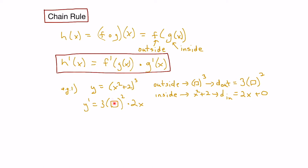Our box represents x squared plus 2, so we'll substitute that back in. Our derivative becomes y prime equals 3 times x squared plus 2 all squared times 2x. Simplifying by multiplying the 3 and the 2x, we get 6x times x squared plus 2 squared.